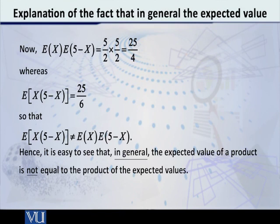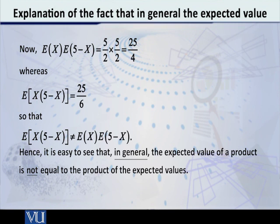However, the product of the two expected values we computed earlier — E[x] times E[5 minus x] — is 5/2 times 5/2, which equals 25/4. So 25/4 is not equal to 25/6. This is a simple example demonstrating that in general, the expected value of a product is not equal to the product of the expected values.